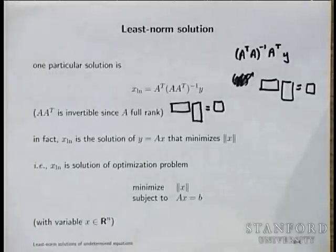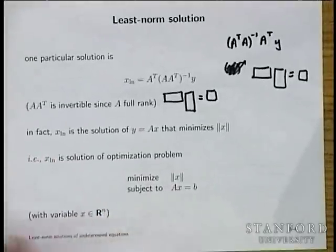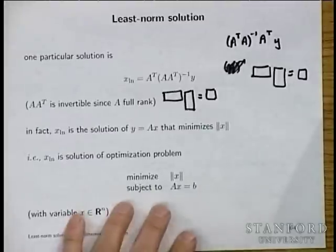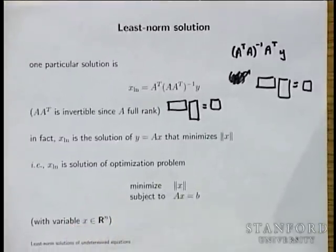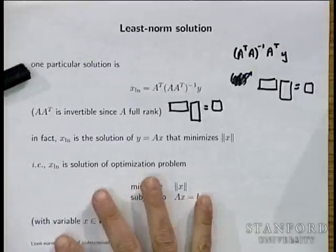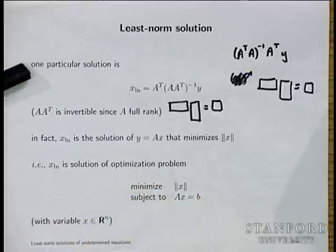You can either crowd up here or in back of one of those. They're working on trying to get the big screen routed. So, least norm solution. As I said last time, this is something like the dual of least squares approximate solution.